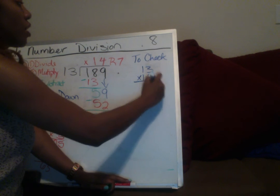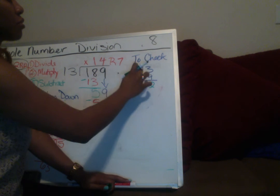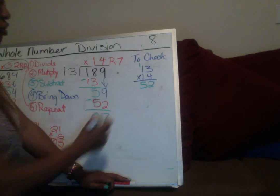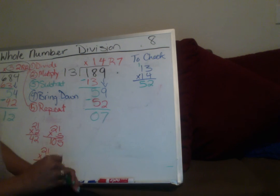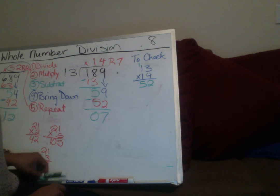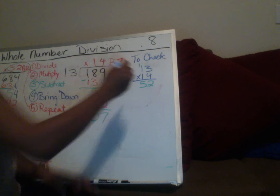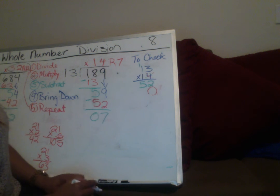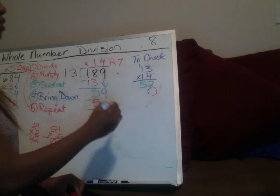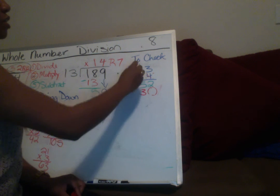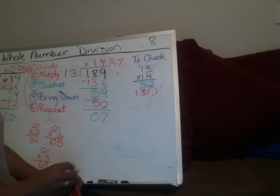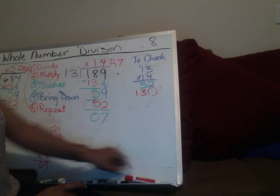Multiply 13 times 14: 3 times 4 is 12, 4 times 1 is 4 plus 1 is 5. We're done with the 4, so put a placeholder 0. Then 3 times 1 is 3, 1 times 1 is 1. One number should be sticking out by itself since we had the placeholder 0. Everything looks good.